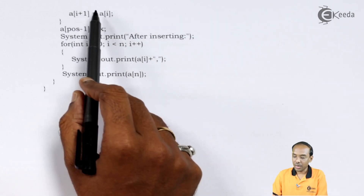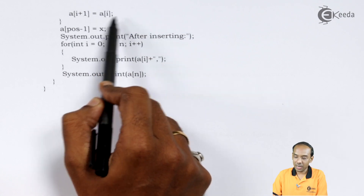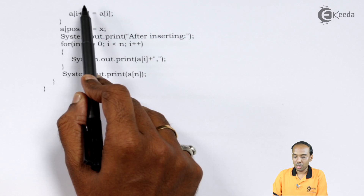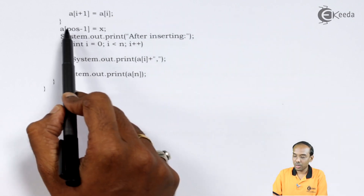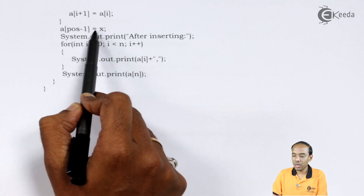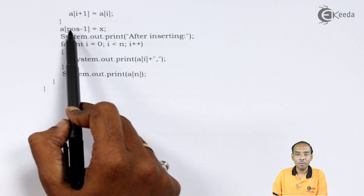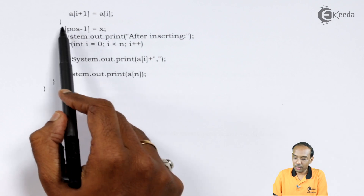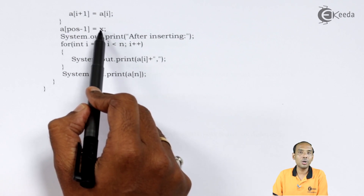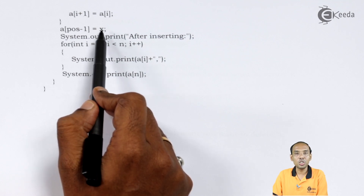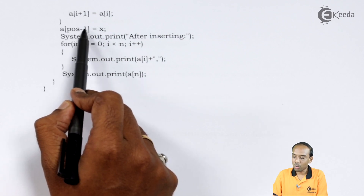Once the condition becomes false — meaning i is no longer greater than or equal to pos minus 1 — the loop stops. At that point we insert the new element: a[pos - 1] = x. The value stored in x is placed at index pos minus 1. For example, if the user specifies position 3 and x is 10, the value 10 is stored at index 3 minus 1, which is index 2.